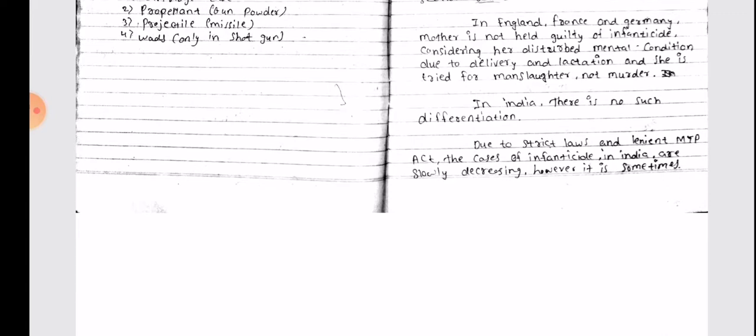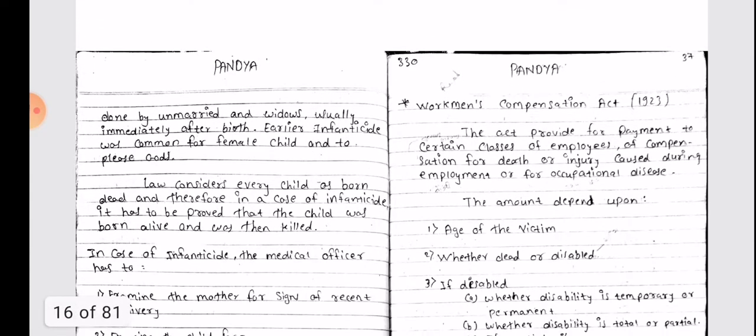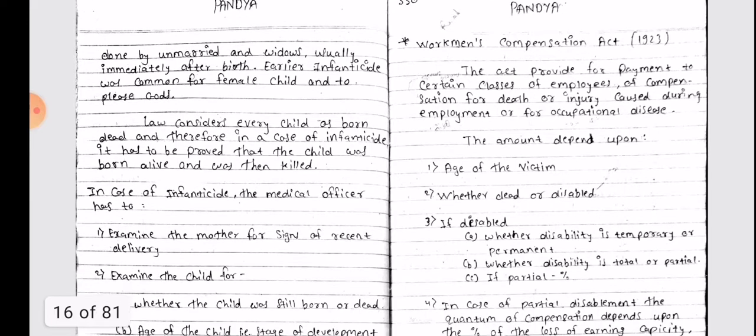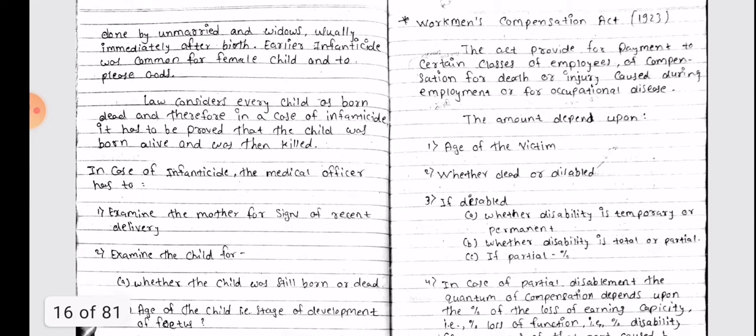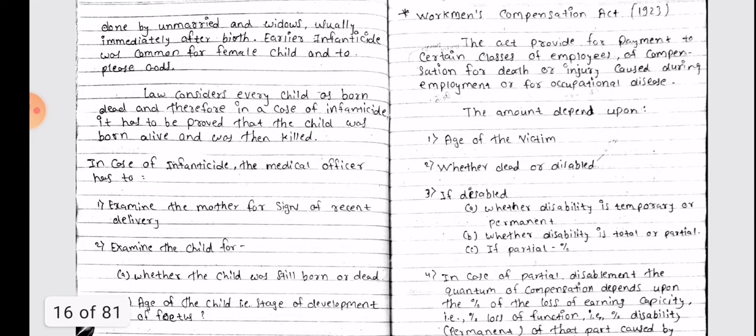Due to strict laws and lenient MTP Act, the cases of Infanticide in India are slowly decreasing. However, it is sometimes done by unmarried women and widows, usually immediately after birth. Earlier, Infanticide was common for a female child and to please the gods.